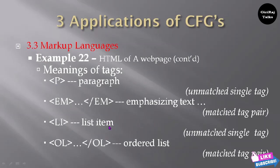This is a continuation of the previous example — the meaning of tags. The P tag is for paragraph; it is an unmatched single tag. The em tag is for emphasizing text; it is a matched tag pair. The li tag is a list item tag; it is an unmatched single tag. OL is the order list tag.